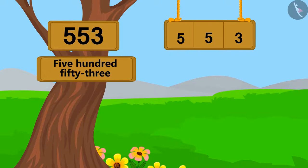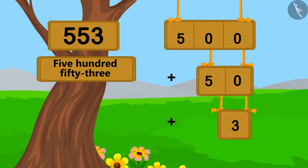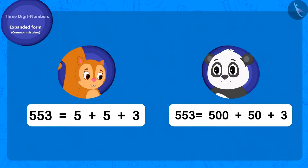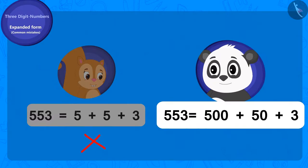Let's write the number 553 in expanded form. 553 is 53 ahead of 500, so we can write it as 500 plus 53. Now we write the expanded form of 53 as 50 plus 3. So the expanded form of 553 is 500 + 50 + 3. Chanda just added the three digits, which gives 13, not 553 — that is wrong. We can see that Golu has written the correct answer using the correct method.